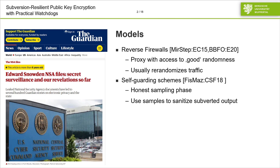Another model or approach are so-called self-guiding schemes introduced by Fischlin and Masahiri. There you have an honest sampling phase where your scheme behaves honestly and you can collect samples, for instance, of signatures. Then a subversion takes place and the implementation changes, and then you use these samples in order to sanitize subverted outputs. It is very similar in spirit to reverse firewalls, because there you have some good source of randomness which you can use in order to remove biases.